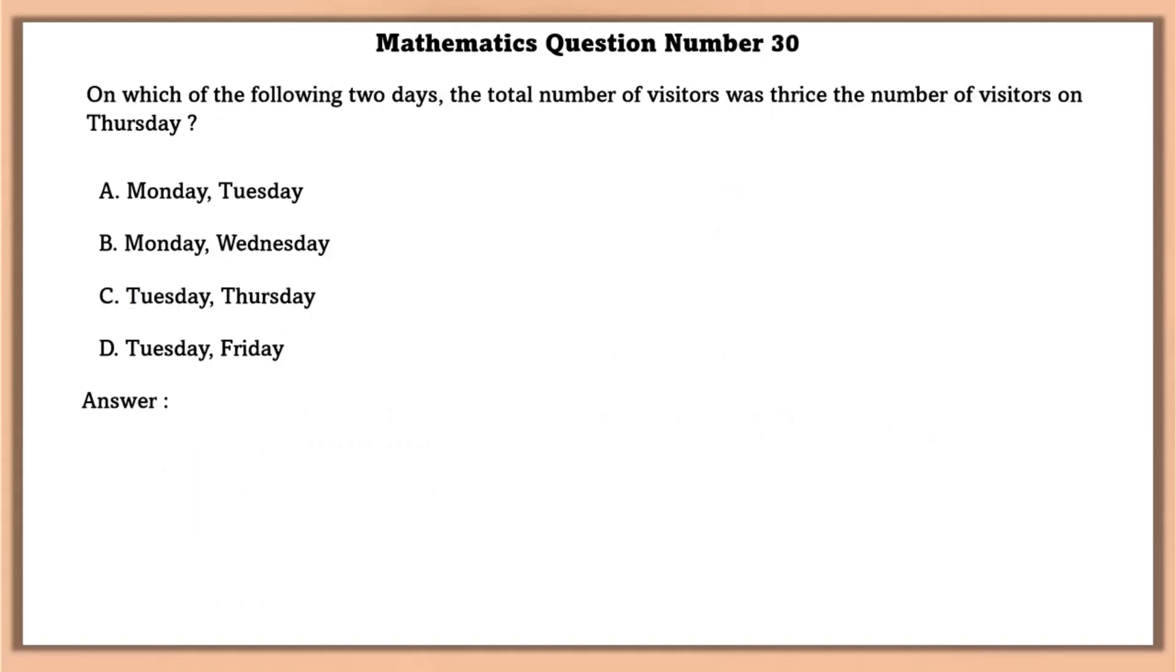On which of the following two days, the total number of visitors was thrice the number of visitors on Thursday? Thrice the number of visitors on Thursday is equal to 450. If we add visitors from Tuesday and Friday, we get 200 plus 250 that is 450.